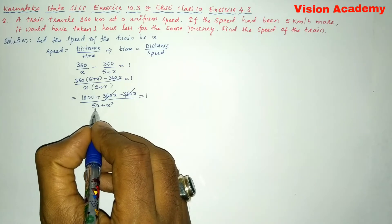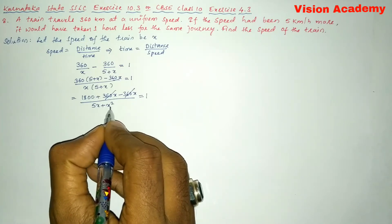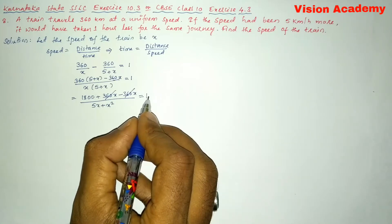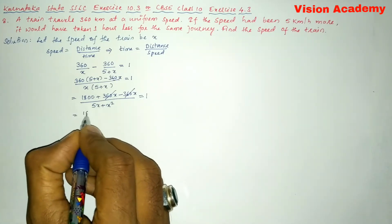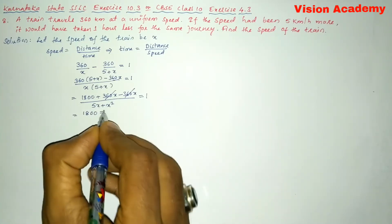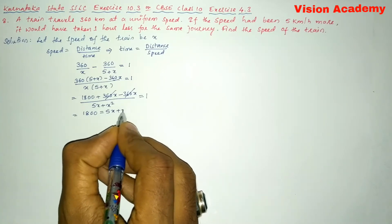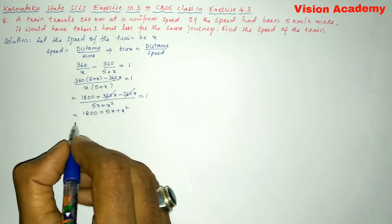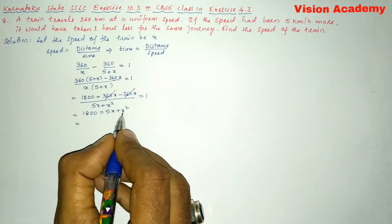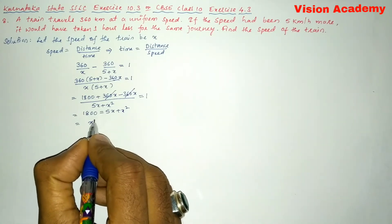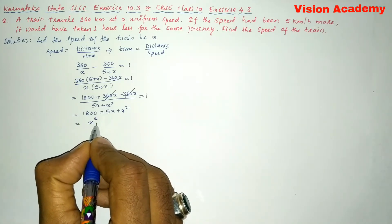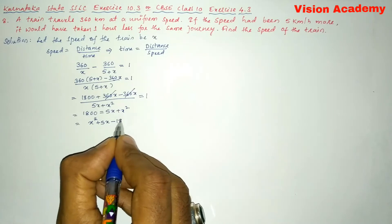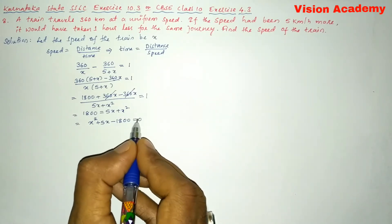Now let us transform this 5x plus x square from LHS to RHS, so it will become multiplied with 1. So this gives us 1800 is equal to 5x plus x square. Now transform this 1800 from LHS to RHS. So this gives us, arranging the terms in decreasing order of their powers, I will write x square plus 5x and this is minus 1800 is equal to 0.